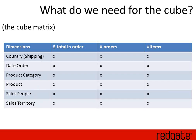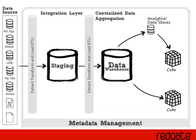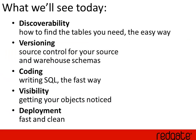Tom, I think you can enlighten us with the next step. Tom appears to have had a connection issue, so I'm going to cover his part. What we'll see today covers five different areas: discoverability, versioning, coding, visibility, and deployment.